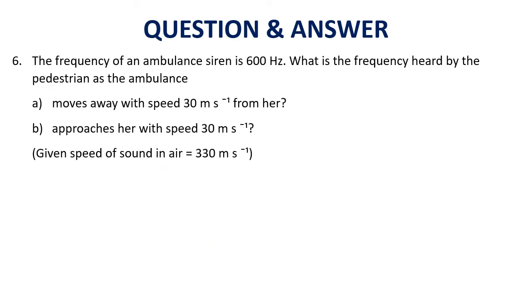The last question is about Doppler effect. The frequency of ambulance siren is 600 hertz, which is f_S, frequency of source. What is frequency heard? This frequency must be by the observer. The observer is the pedestrian. In the syllabus, one must stay, one moves. The observer does not move. The one moving is the ambulance. It tells us the ambulance moves away with speed 30 from that girl. Question B is if the ambulance approaches her with speed 30 also. Calculate the frequency heard by the girl.